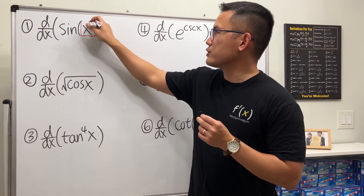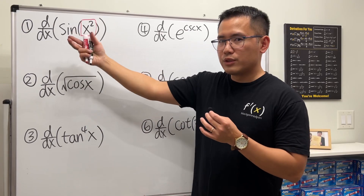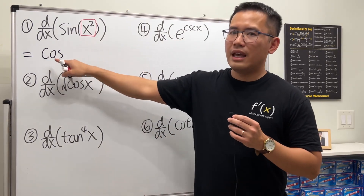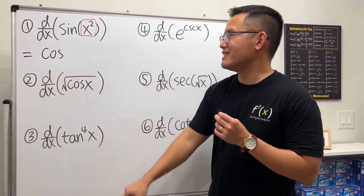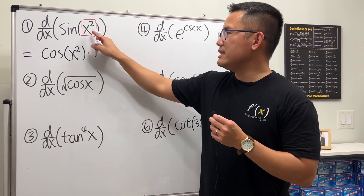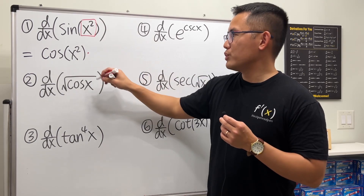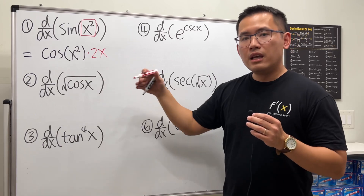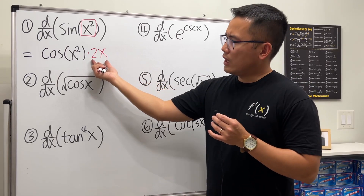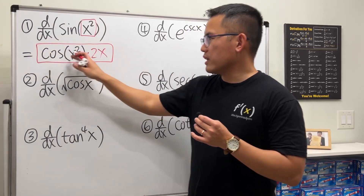Sine of x squared is like saying sine of an input function — sine of a box. We differentiate the outer function, sine, first. The derivative of sine is cosine — sine and cosine are best friends in calculus. The box stays, so we write cosine of x squared, then multiply by the derivative of the inside. The derivative of x squared is 2x.